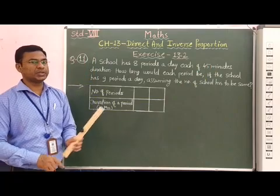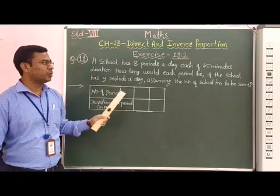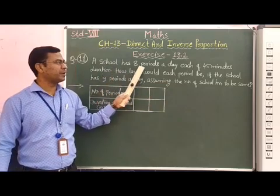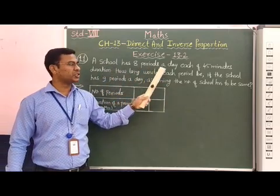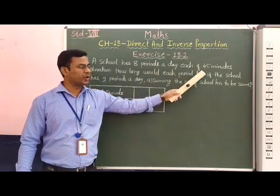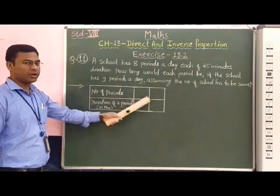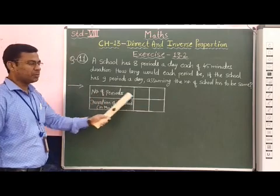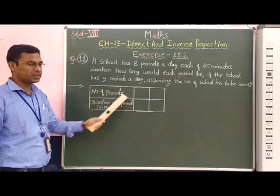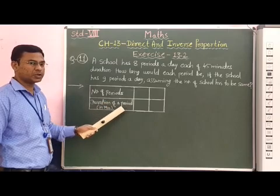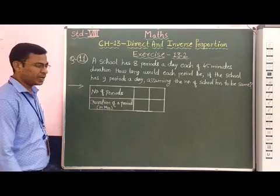Students, in this question it is given that for a prescribed school time, if there are 8 periods, then duration of each period is 45 minutes. I have one table here: in the first row, number of periods, and in the second row, duration of a period in minutes.